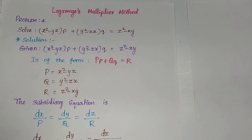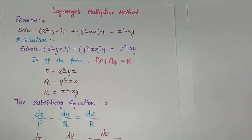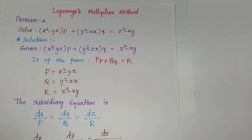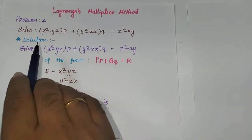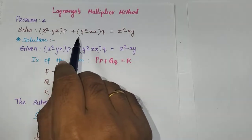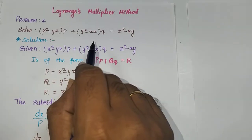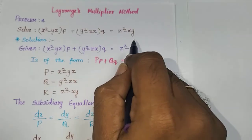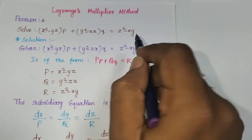Welcome to Carrier Guidance Max Playlist. In this video I am going to start problem number 4 in Lagrange's Multiplier method. The problem is: (x² - yz)p + (y² - zx)q = z² - xy.